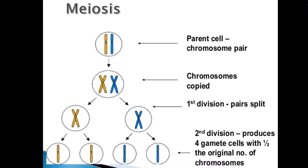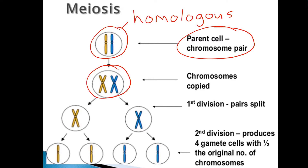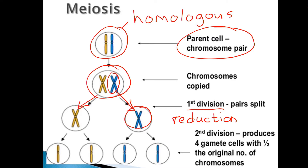Let's have a look at an overall scheme. We start off with a parent cell which has a pair of chromosomes — and remember these are called homologous chromosomes because they contain instructions for the same characteristics. The chromosomes then replicate and form the typical chromosome structure looking a bit like an X. Then in the first division of meiosis the pairs split so each new cell has only got one chromosome, and that is why it is called the reduction division, because it's reducing the number of chromosomes.